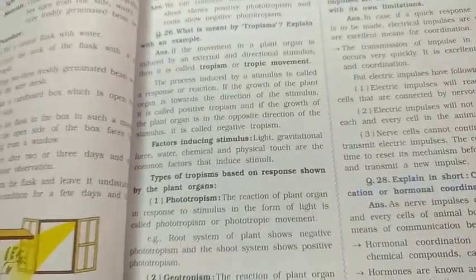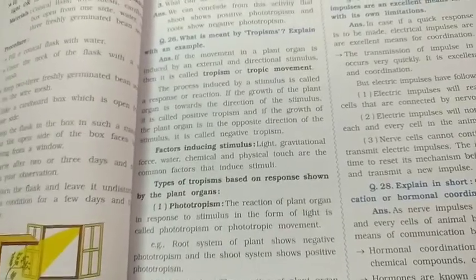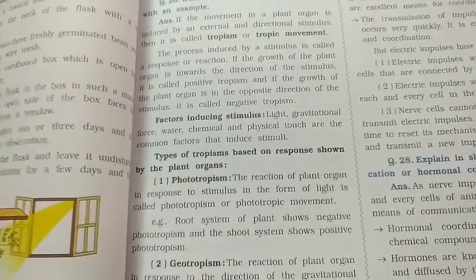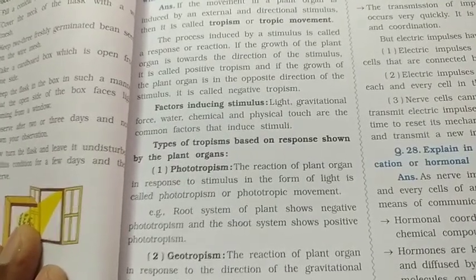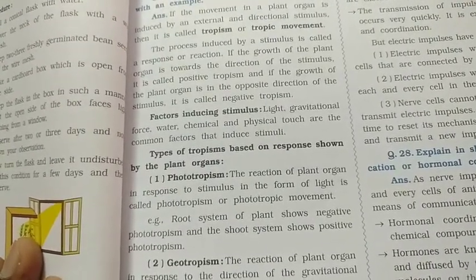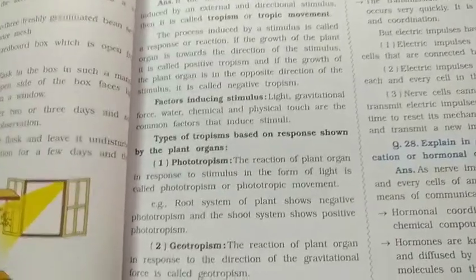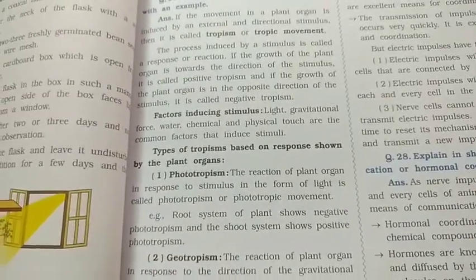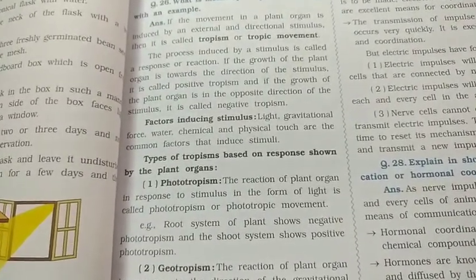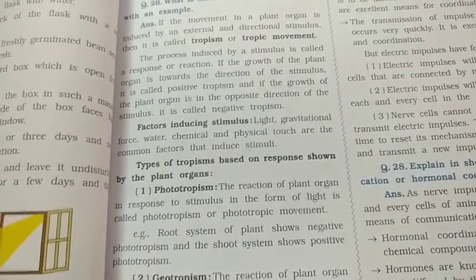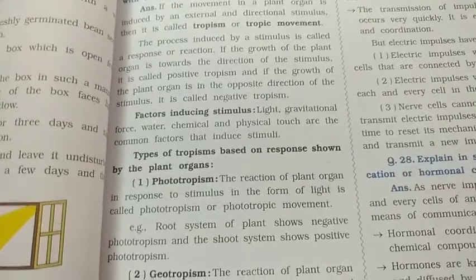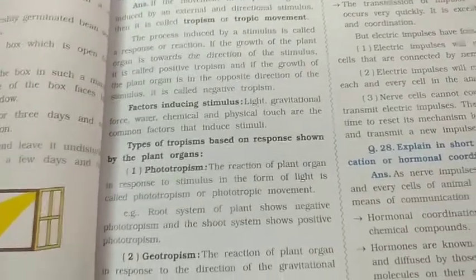The first type is phototropism. The reaction of a plant organ in response to a stimulus in the form of light is called phototropism. We all know that plants carry out photosynthesis, and light is the stimulus for this response.